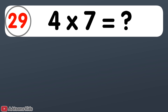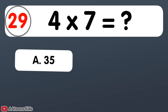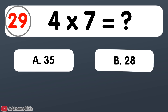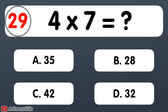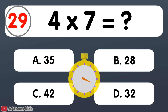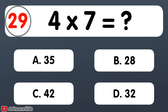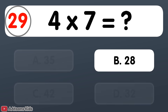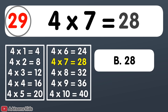4 times 7 is equal to... 28. 4 times 7 is 28.